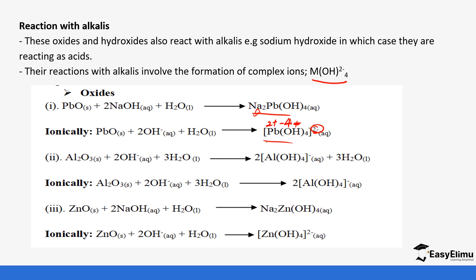Aluminum oxide also reacts with sodium hydroxide to form aluminate, as you can see. This one is slightly different in charge balancing: aluminum is 3+ and the four hydroxide ions give 4−, leaving a net 1− charge. For zinc, the balancing is the same as for lead.